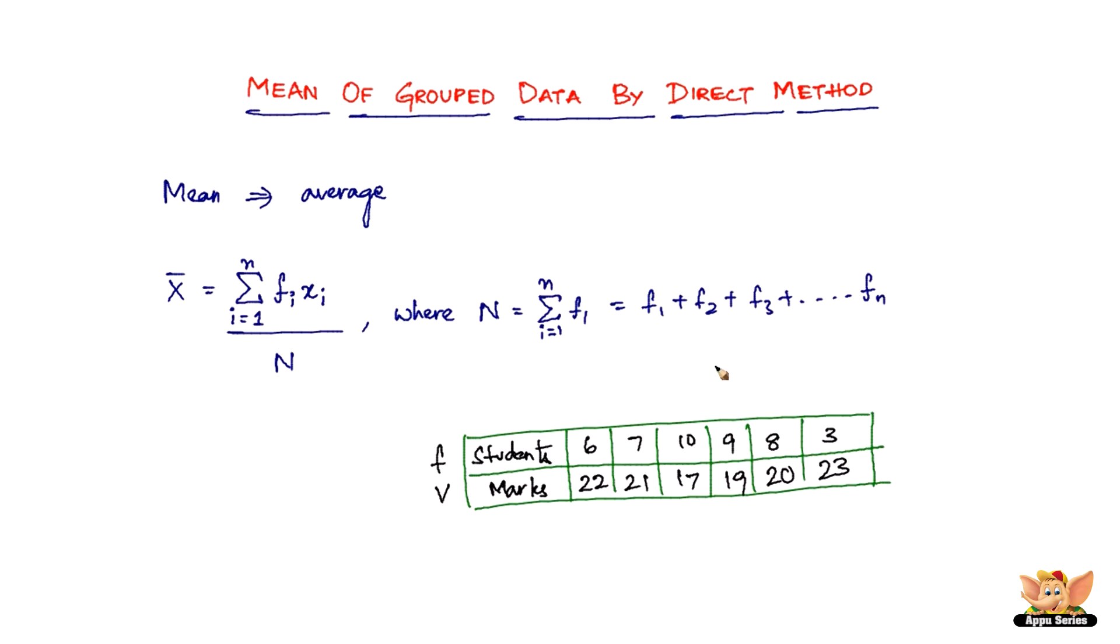So to find the average marks of all the students, to find the mean marks, you need to add all the students and then multiply the marks - 22 times 6. So this is fi and this is, let's say xi. This is the variate, let's keep this as xi. So now fi into xi, so 6 times 22, 7 times 21.